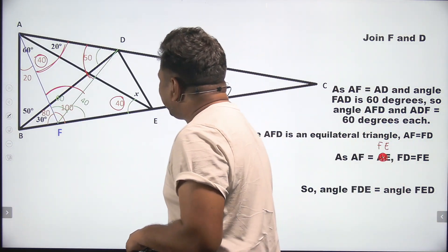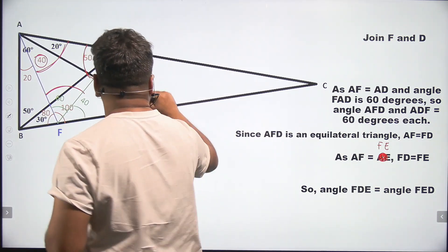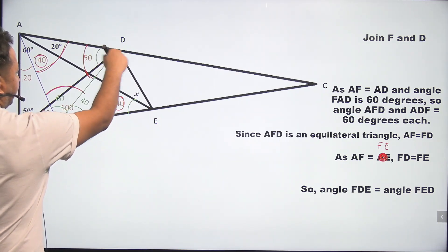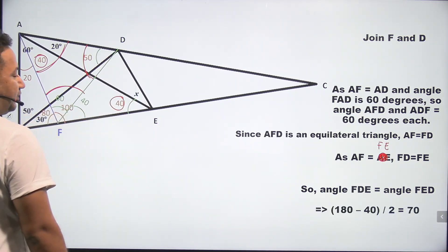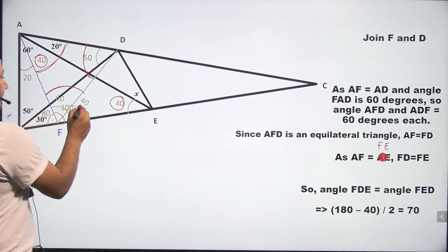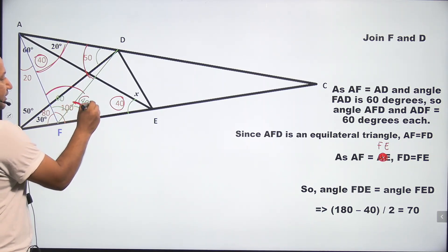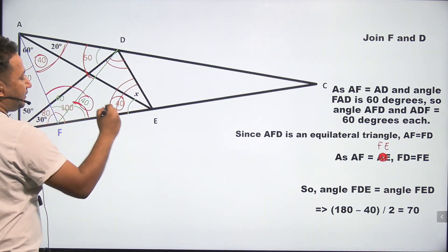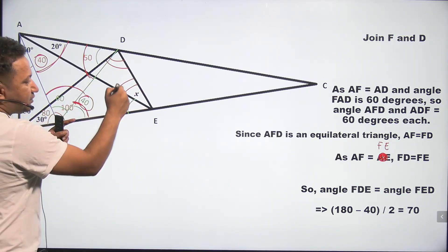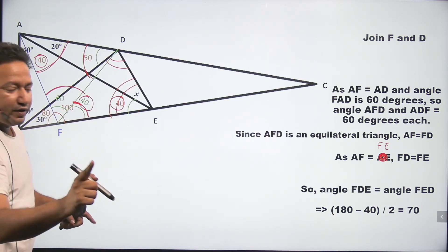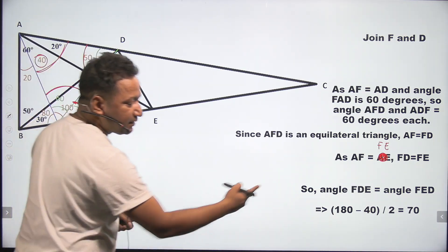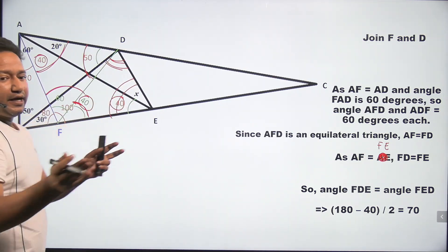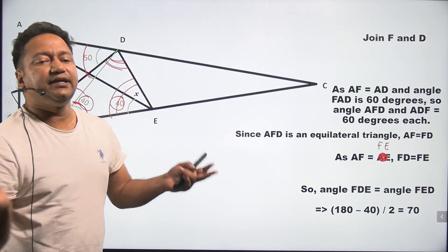So, angle FDE, this angle FDE will be equal to angle FED. Because these two sides are equal. Now, as you see that this thing is 40, as mentioned here. And these two are equal. Now, this is 40. So these two, sum of these two should be 180 minus 40. That is 140. Which also means that these two angles, if the sum is 140, individually they will be 70 degrees each.